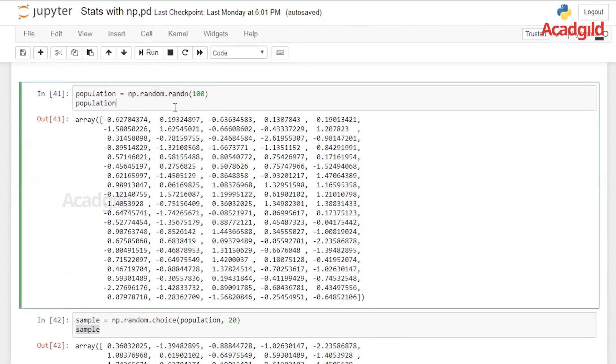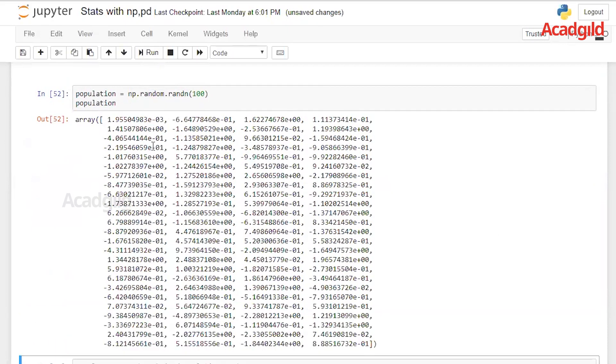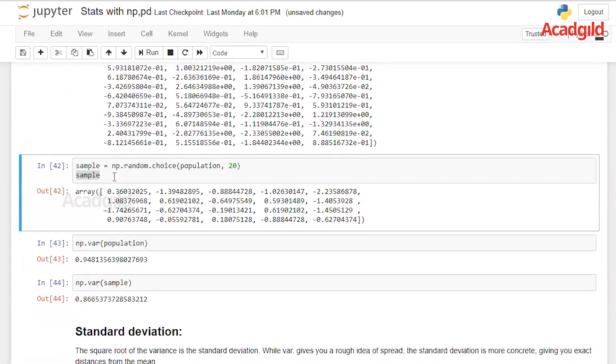For the population in this example, I'm considering the normal distribution, as mentioned in the previous example. Let us go ahead and run this, and we get 100 observations. And for sample, I'm taking 30 samples as well.